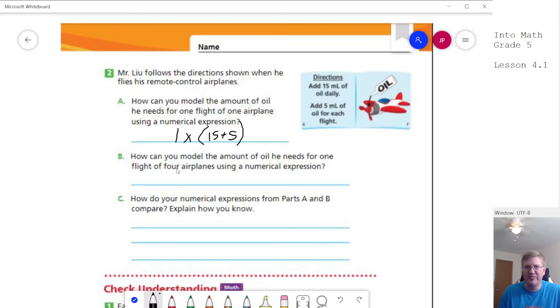Assuming you paused the video, our number here is going to change. So we are going to say that we're doing four airplanes times the amount of oil. We would use 15 milliliters of oil before we would start flying, and then we would use five afterwards. So how do those compare? That's the big thing we're working on today - comparisons. The second one for part B is going to give us an amount that's four times larger than the first one.